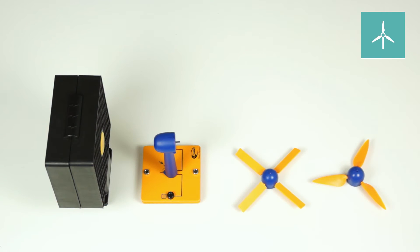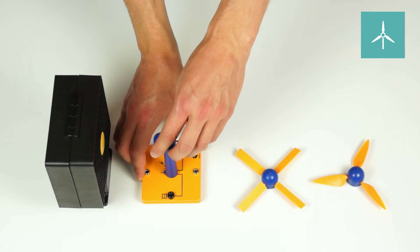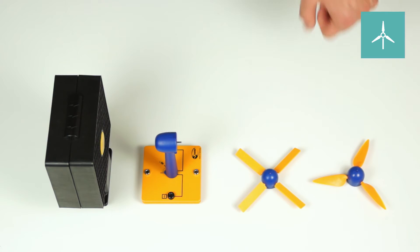For wind power experiments, a wind machine and a wind turbine are used. This way, different conditions like wind direction, wind speed or type of rotor can be varied in experiments.